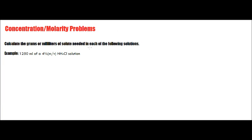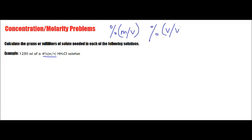When dealing with concentrations, typically you're going to have examples where you're trying to find a percentage — an MV concentration or percentage. What we'll be looking at is mass-volume concentrations. Sometimes we might be looking for mass percent, volume-volume, and sometimes even mass-mass.